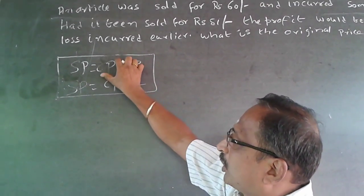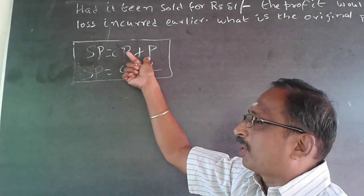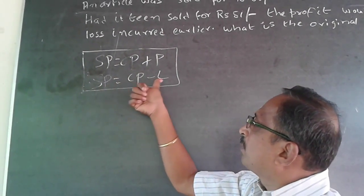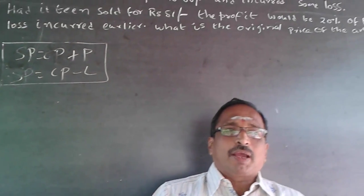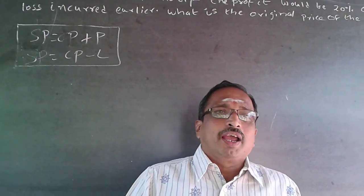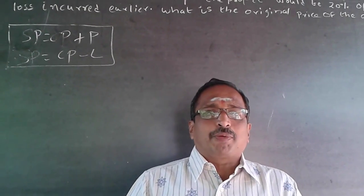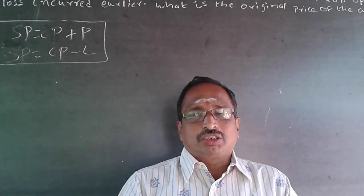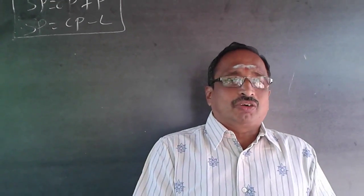For example, suppose the cost price is Rs 10. If I sell for Rs 12, I make a profit of Rs 2. If I sell for Rs 8, I make a loss of Rs 2. By default, whenever profit or loss percentage is mentioned without further specification, it is always calculated on cost price.